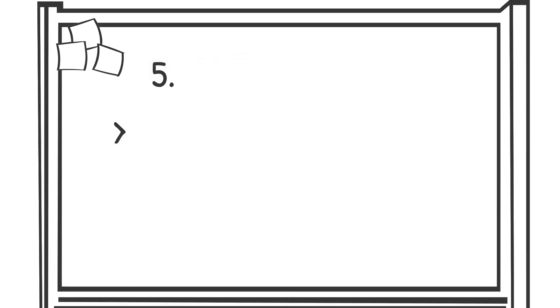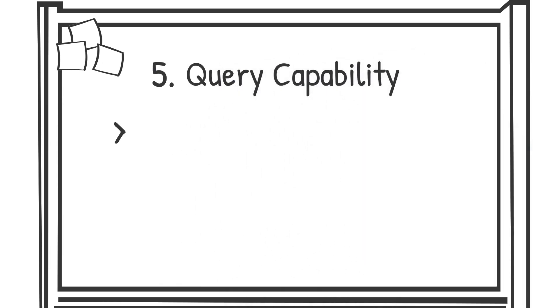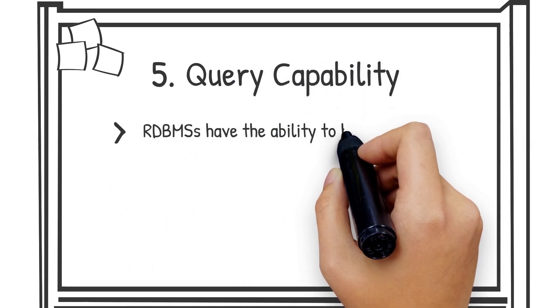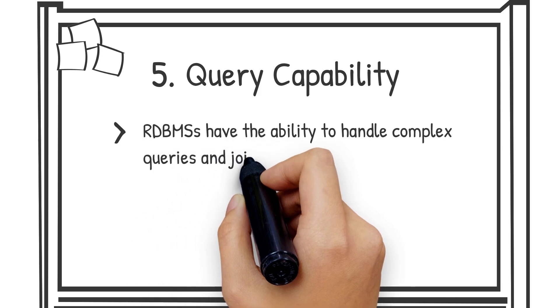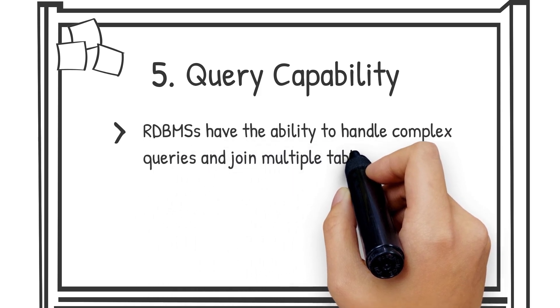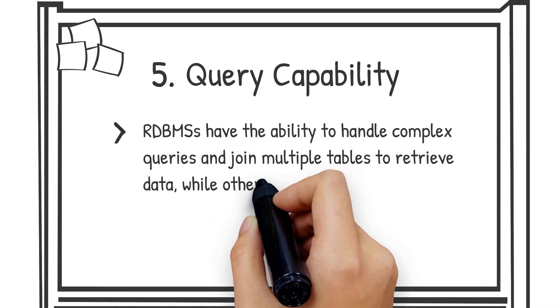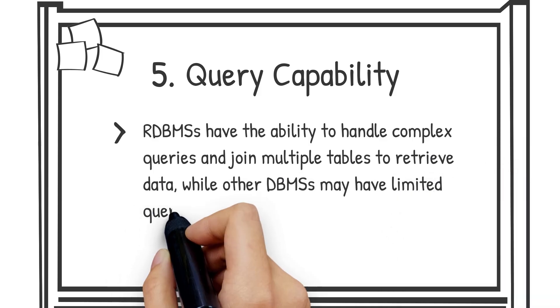Number five, query capability. RDBMSs have the ability to handle complex queries and join multiple tables to retrieve data, while other DBMSs may have limited query capabilities.